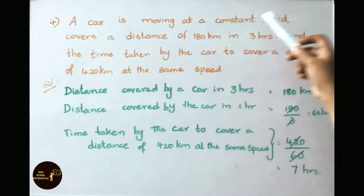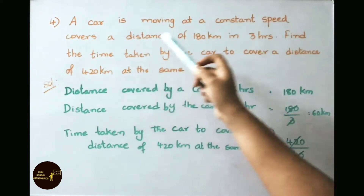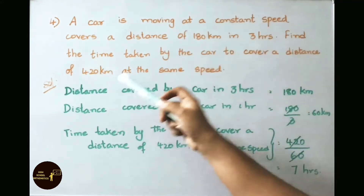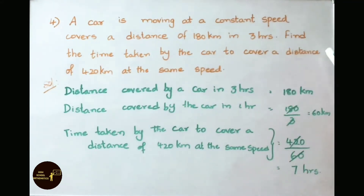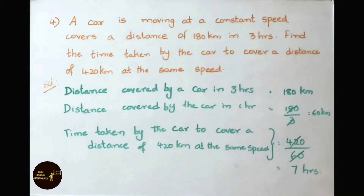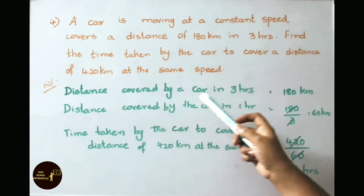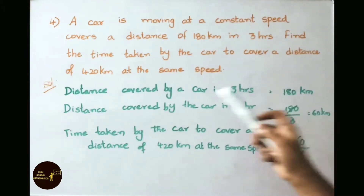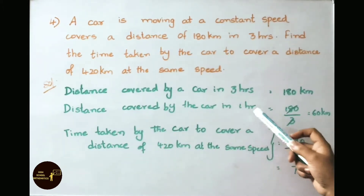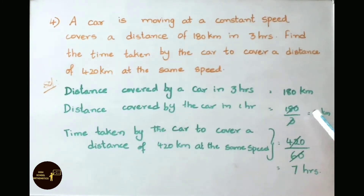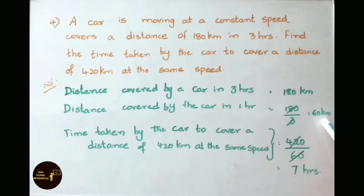Question number 4: a car is moving at a constant speed and covers a distance of 180 kilometers in 3 hours. Find the time taken by the car to cover a distance of 420 kilometers at the same speed. Distance covered by the car in 3 hours equals 180 kilometers. Distance covered in 1 hour equals 180 by 3 — 3 times 60 is 180 — so distance covered in 1 hour is 60 kilometers.